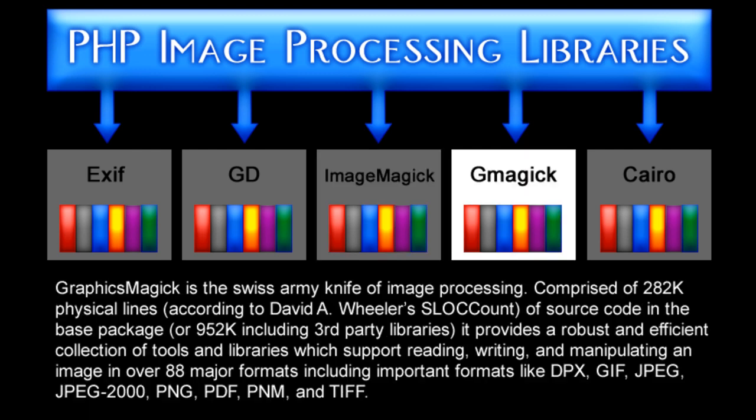GraphicsMagick is the Swiss army knife of image processing. Comprised of 282 kilobytes of physical lines of source code in the base package, it provides a robust and efficient collection of tools and libraries which support reading, writing, and manipulating an image in over 88 major formats, including important formats like DPX, GIF, JPEG, JPEG2000, PNG, PDF, PNM, and TIFF.